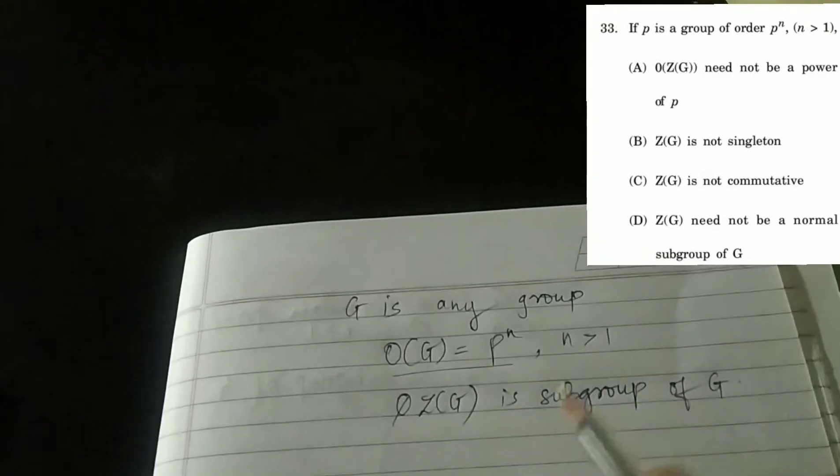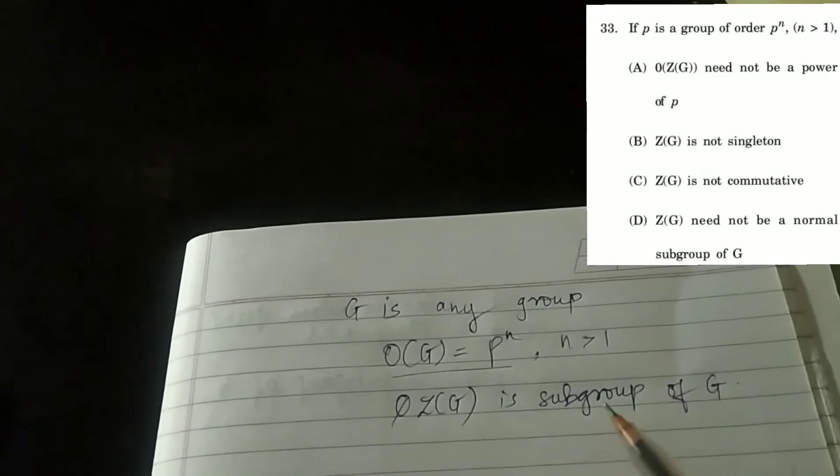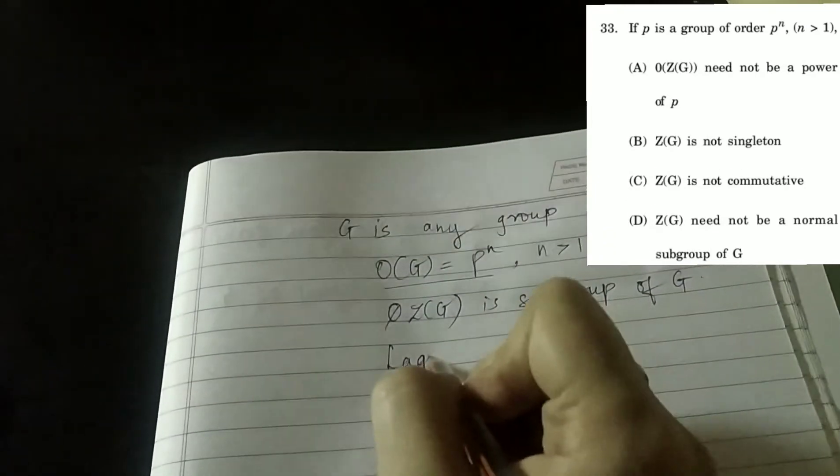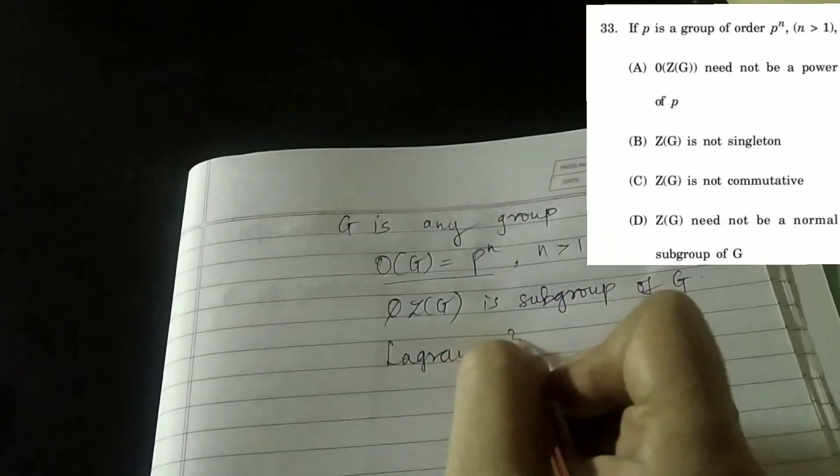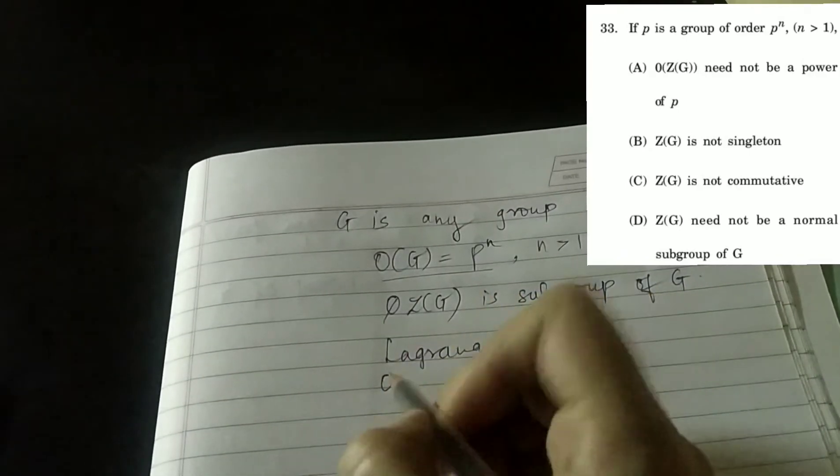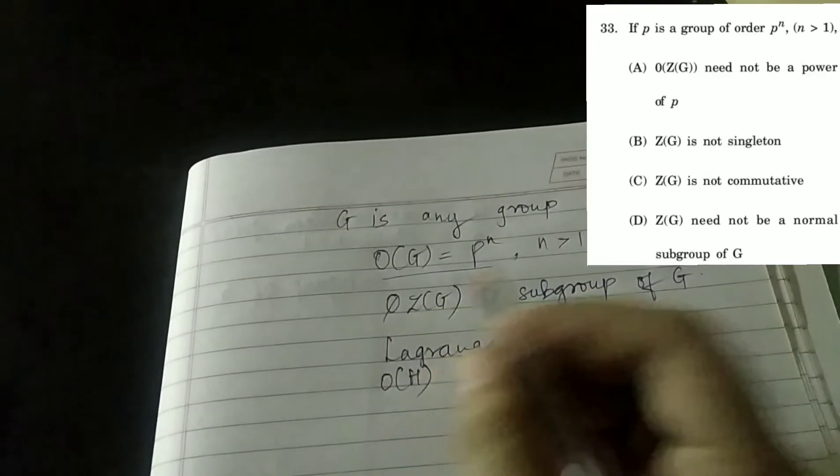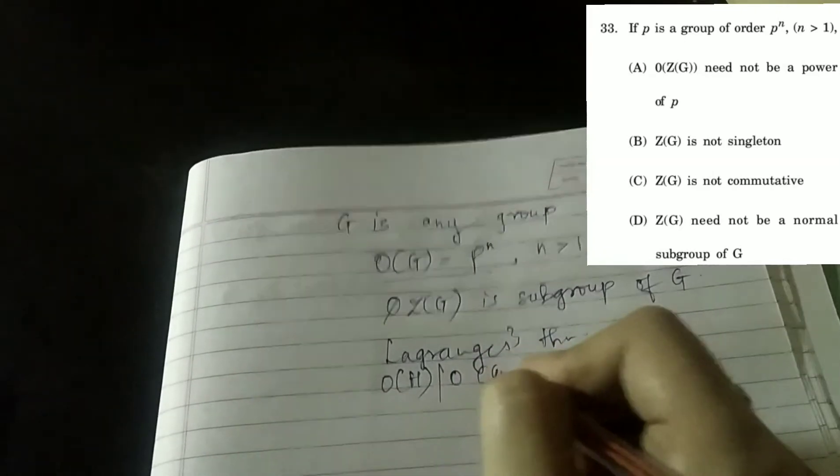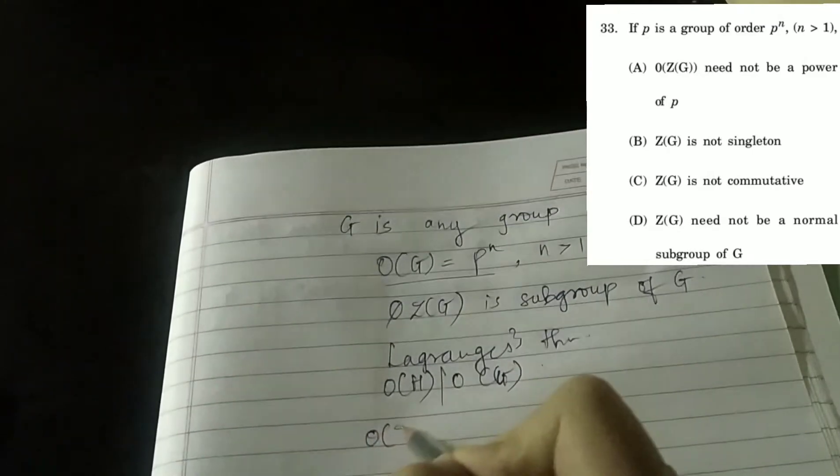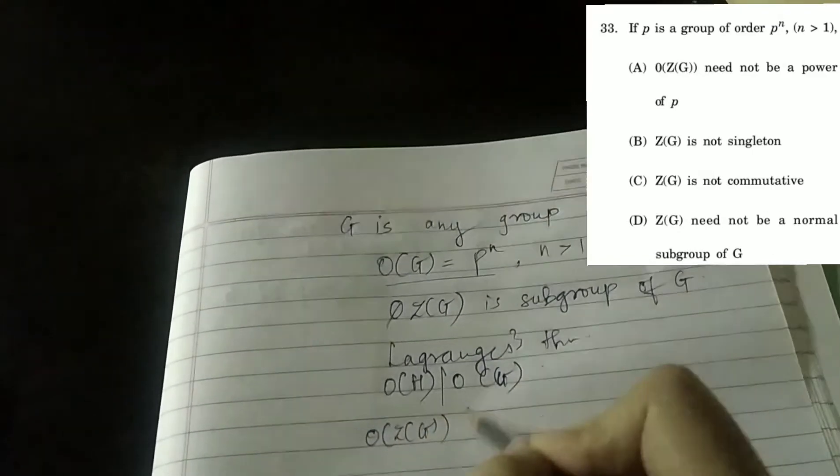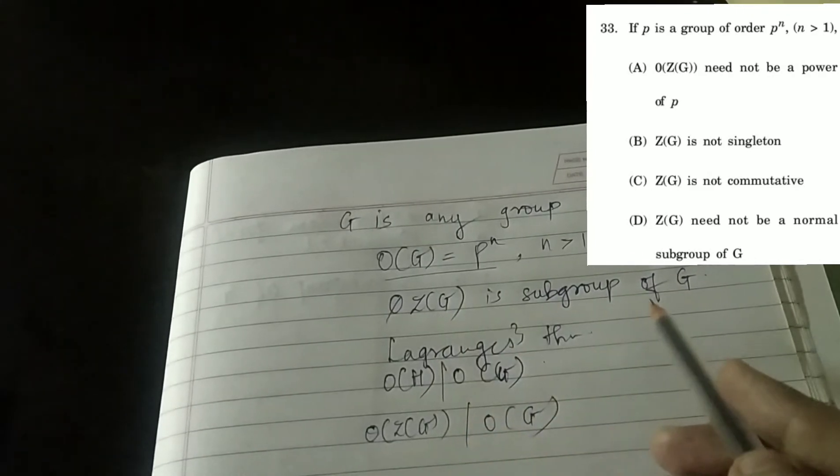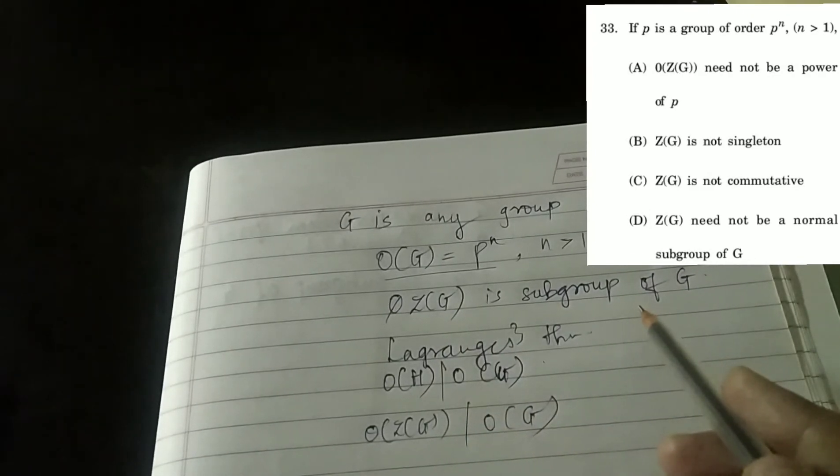Another theorem which is very powerful in group theory is Lagrange's theorem. It says that order of any subgroup H divides order of group G. That means this order of Z(G) should divide order of G since Z(G) is subgroup of G.